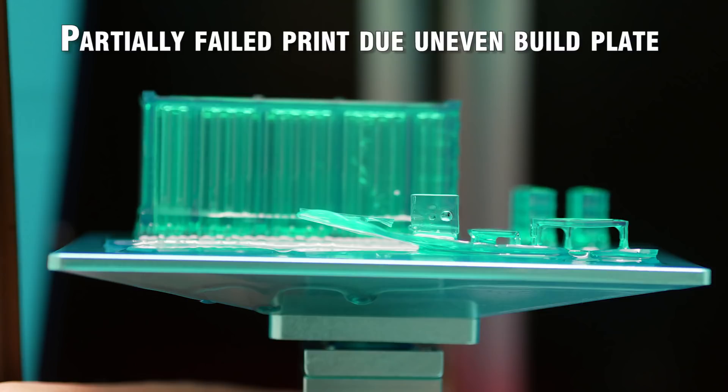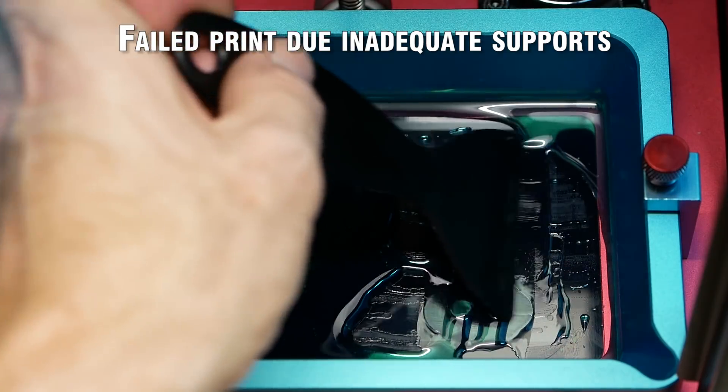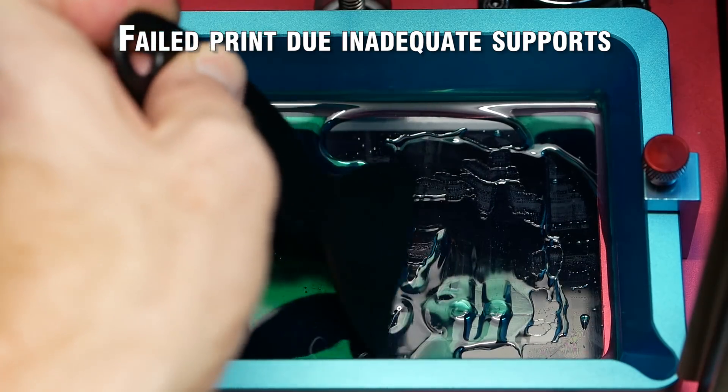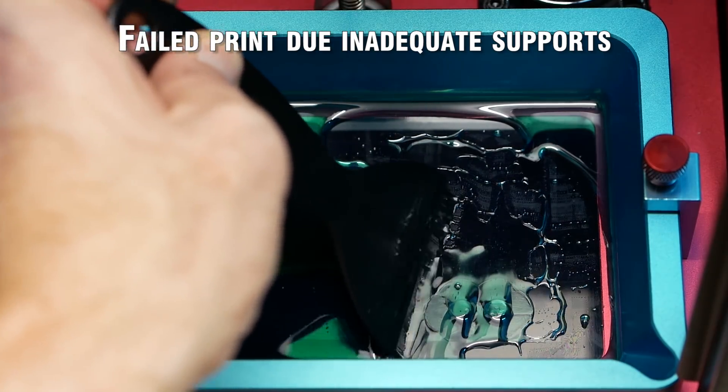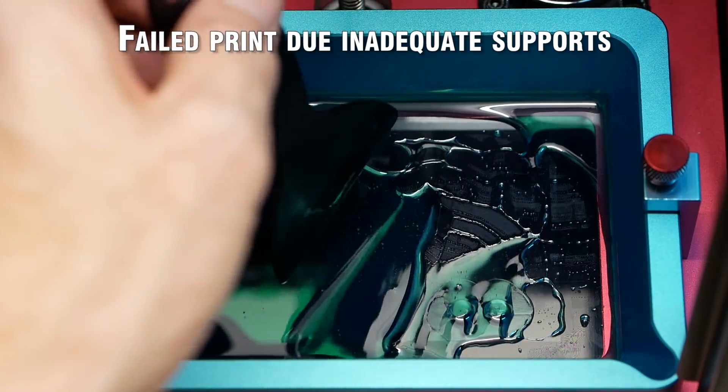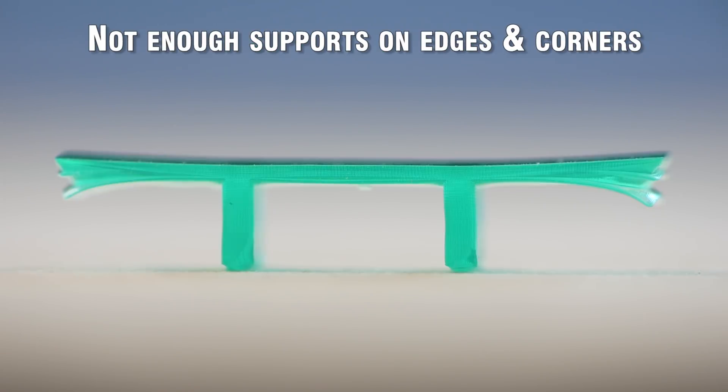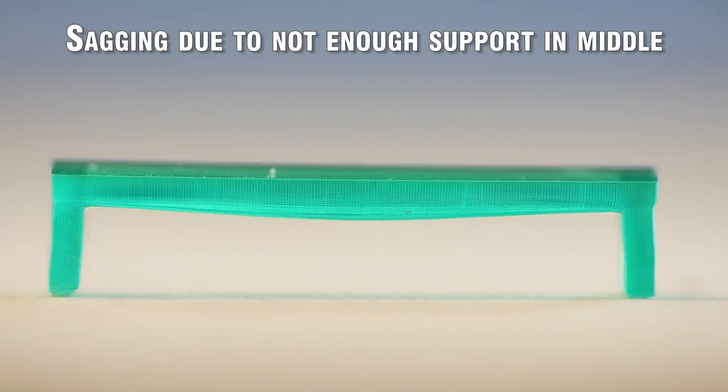A couple of print limitations you may run into can be seen here. Every printer has its limitations to what can and can't be printed. Some things turn out better than others and part orientation plays a big role in achieving high quality prints. Be sure to visit Boulder Creek Railroad for a more in-depth review on what sort of problems to expect and how to avoid them when designing and printing models using DLP resin printers.